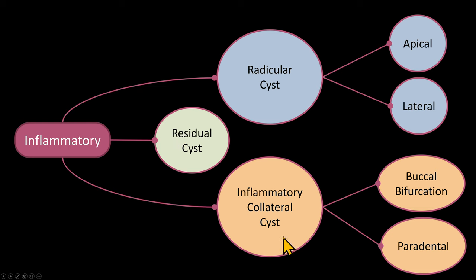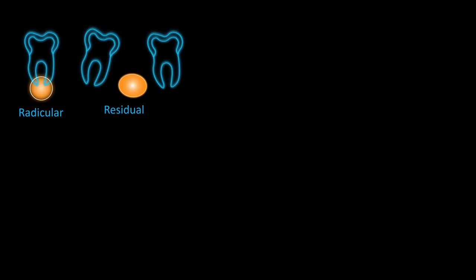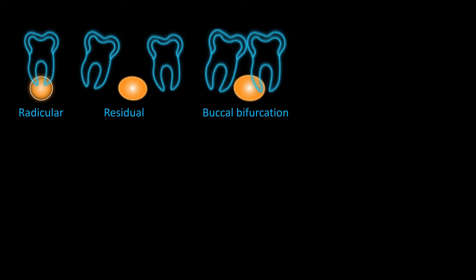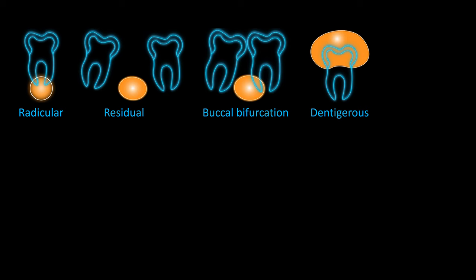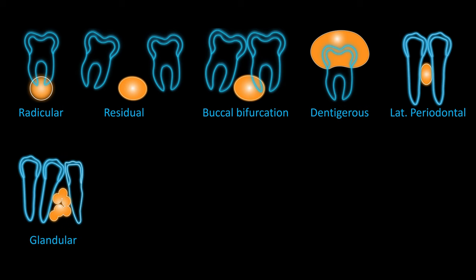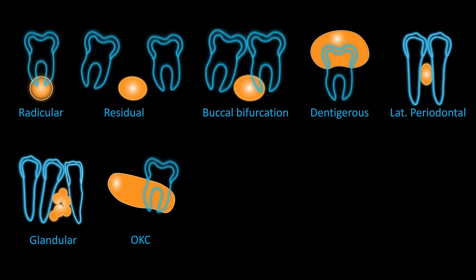The third type is an inflammatory collateral cyst, which can be a buccal bifurcation cyst or a paradental cyst. We'll start with the radicular cyst and also discuss the residual cyst. Then we'll proceed with the buccal bifurcation cyst. We'll spend some time on the dentigerous cyst, then briefly discuss the glandular odontogenic cyst. We'll spend quite some time discussing the odontogenic keratocyst, or OKC, which is an aggressive cyst requiring our full attention. All these cysts are odontogenic.